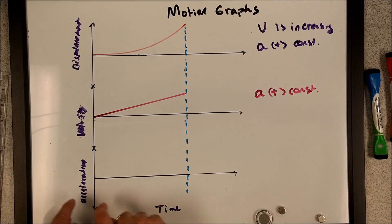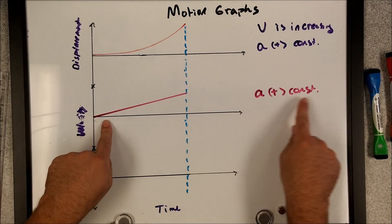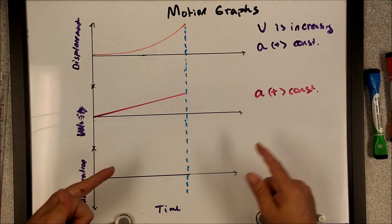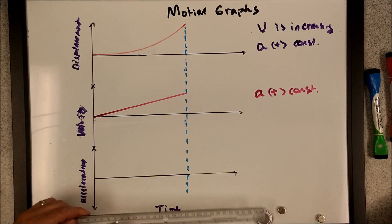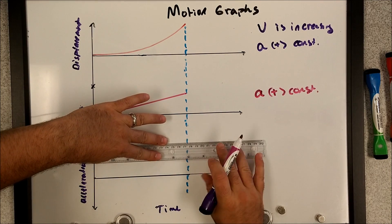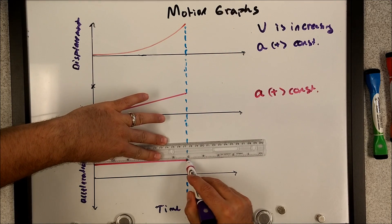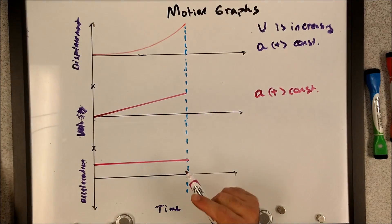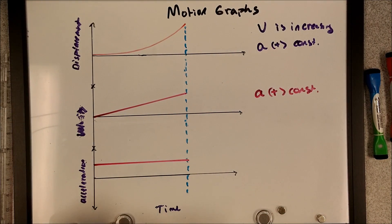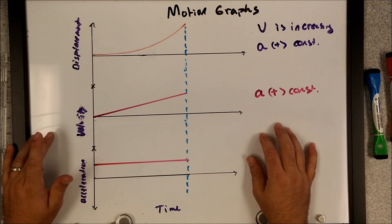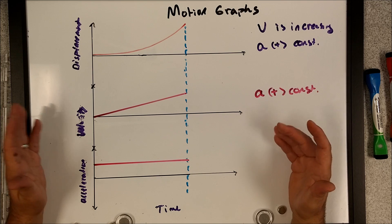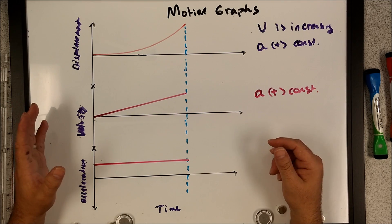Lastly, the acceleration time graph. I have constant positive acceleration, so all I need is a horizontal line above the origin. Non-numerically of course — if I had numbers I'd place it more precisely. That's going to wrap up everything for motion graphs. I'm going to go through a series of examples with more quantities in the next video.